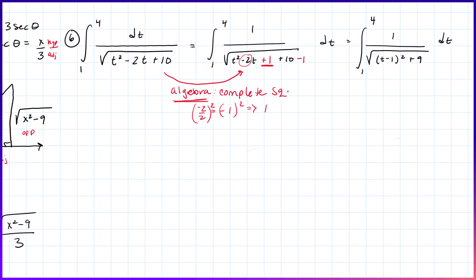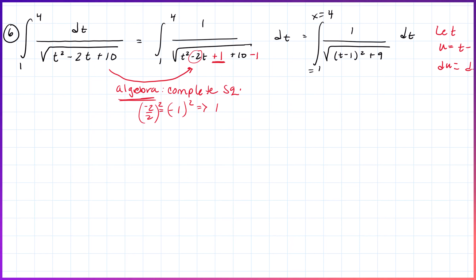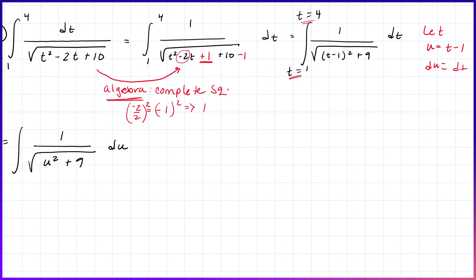We'll do a u-substitution to clean this up. Let u = t − 1, so du = dt. Since this is a definite integral, we update the bounds: when t = 1, u = 0; when t = 4, u = 3. The integral becomes ∫₀³ 1/√(u² + 9) du. Now we're in an integral of the form x² + a², with a = 3.